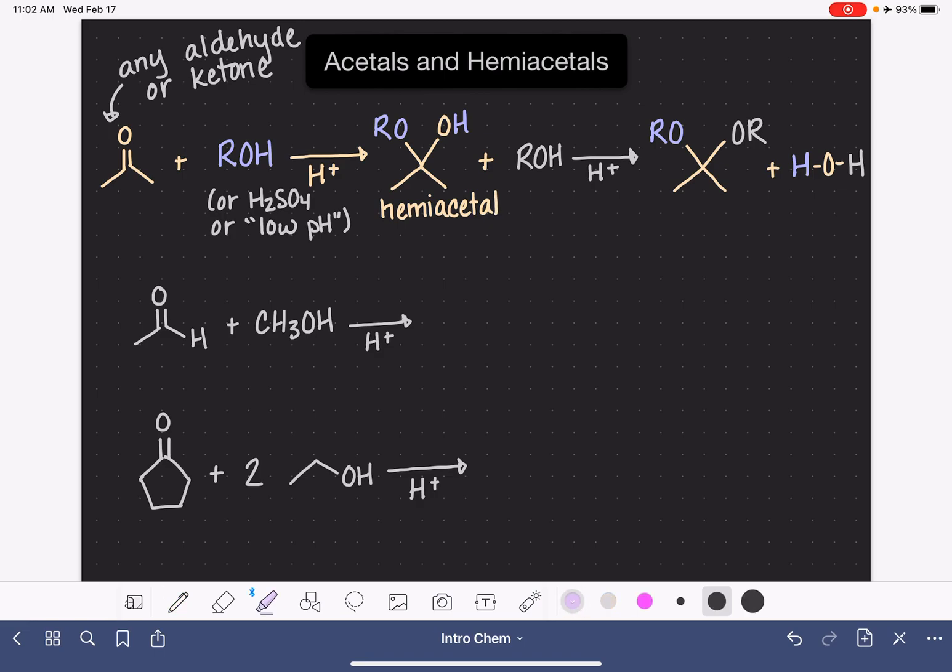The hemiacetal's characteristic is this particular series of atoms. So it is an R group. This R group is just some sort of carbon chain followed by an oxygen, followed by a carbon atom, followed by an oxygen, followed by a hydrogen.